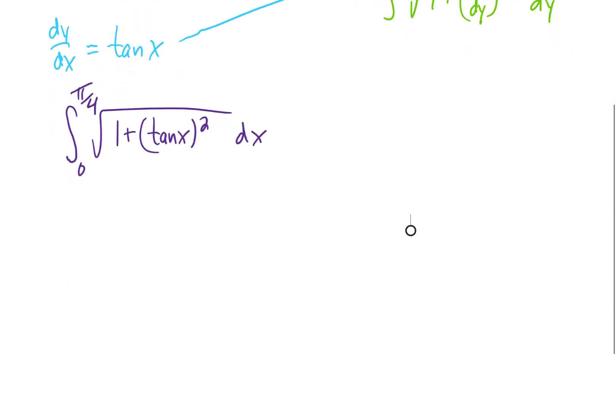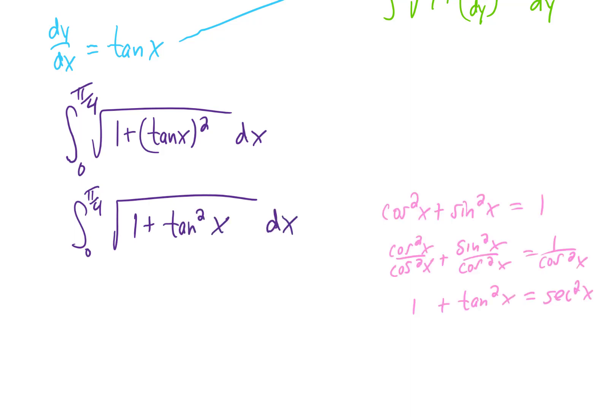We get the square root of one plus tangent squared. More commonly, we write that like this. Either you remember your trig identities or at least you remember this simple one: cosine squared of x plus sine squared of x equals one. You remember that you can divide both sides of this equation by cosine squared x and simplify to get that one plus tangent squared x simplifies to secant squared x.